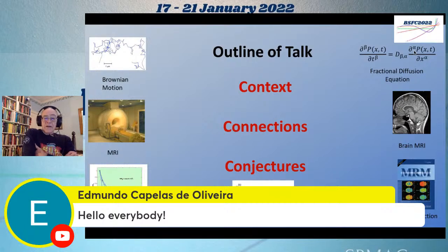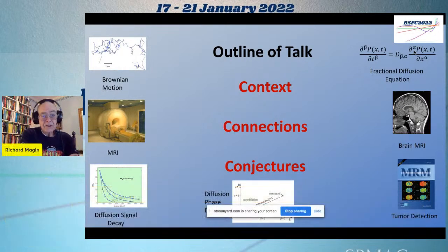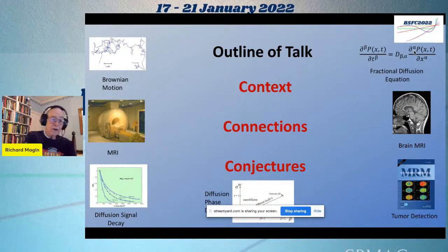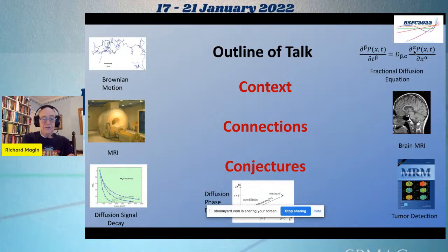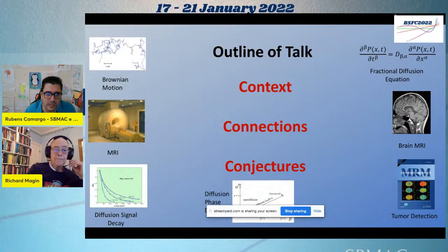The outline of the talk is divided into three sections. The first section is context — I'll try to put the work we're doing with fractional calculus in MRI into its historical context. Next I'll establish connections between MRI and fractional calculus. Then at the end, if we have time, I'll speculate with conjectures about what aspects of this could be continued.